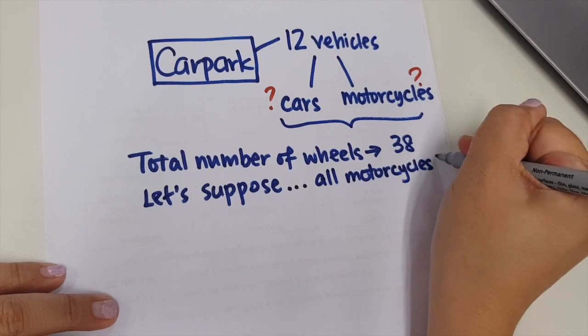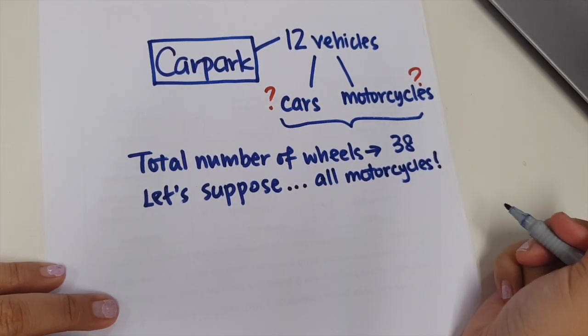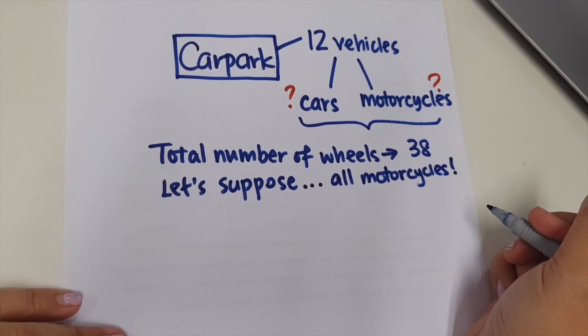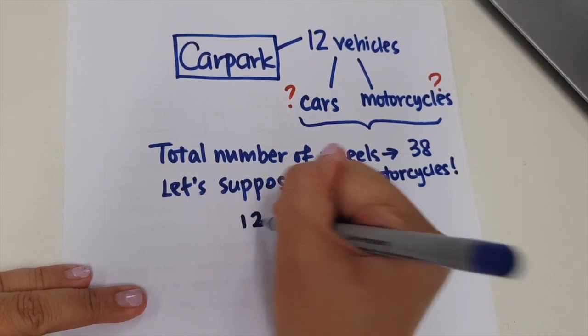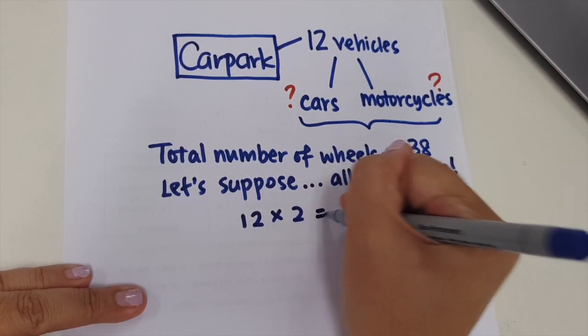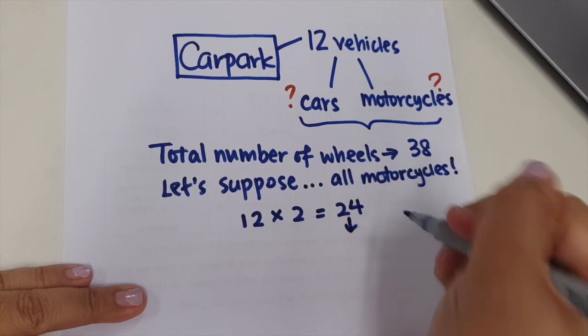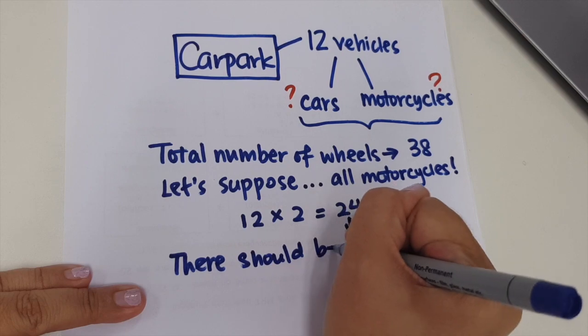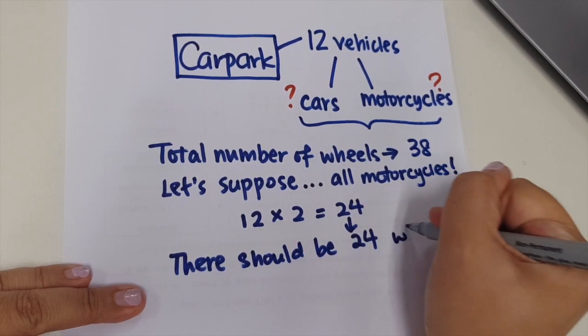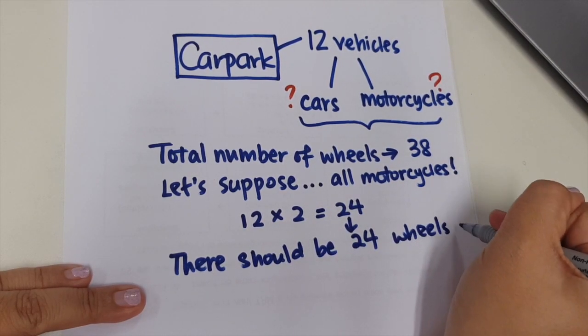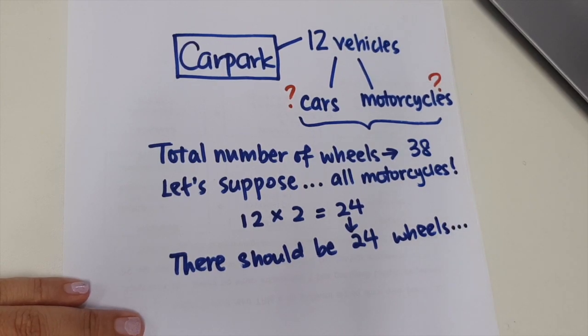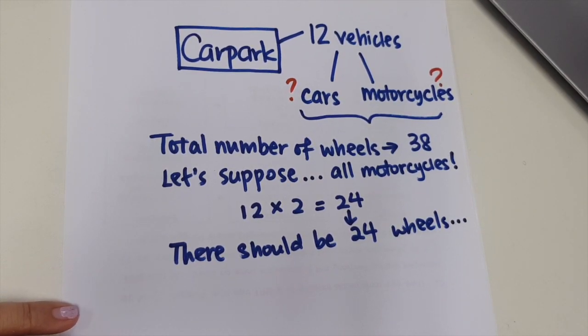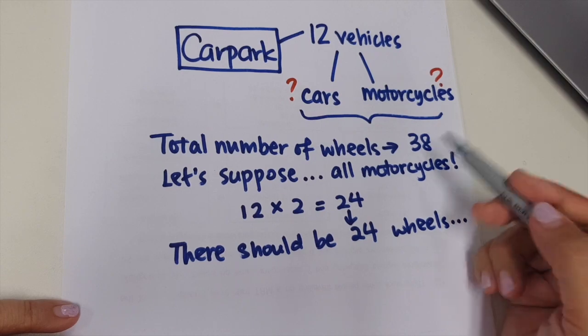So let's suppose all motorcycles. What does it mean? It means that let's assume or let's just suppose that all 12 vehicles are motorcycles. So if all 12 vehicles are motorcycles, there will be a total of 24 wheels. Each motorcycle has two wheels, so I take 12 multiply by 2, I get 24. So there should be 24 wheels if we suppose there are all motorcycles.